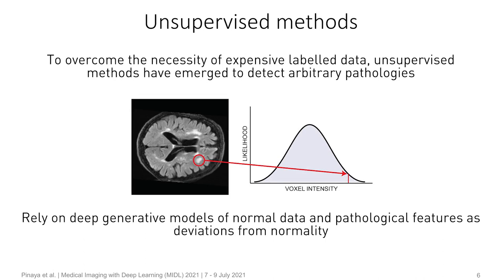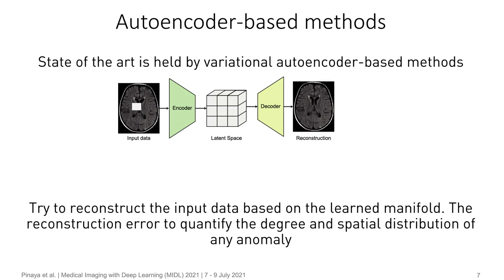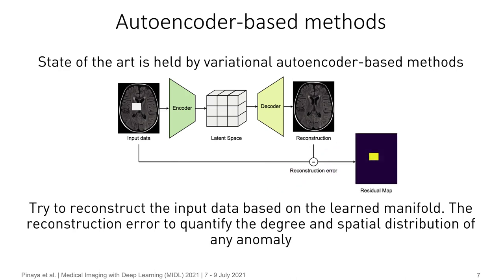To overcome the necessity of expensive labeled data, unsupervised methods have emerged as promising tools to find arbitrary pathologies. These unsupervised methods have relied mainly on deep generative models of normal data, where they learn the probability density estimate of the input data. In this case, anomalies are registered as deviations from normality. The current state of the art is held by variational autoencoder-based methods, where these methods try to reconstruct the input data based on what they learned from the training dataset with normal data. The reconstruction error is then used to quantify the degree and spatial distribution of any anomaly. Even with good results, the success of these methods is still limited by the quality of their reconstructions.